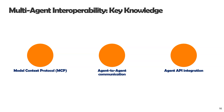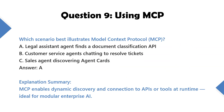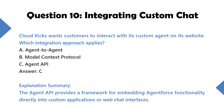This domain tests how multiple agents and external systems communicate, using MCP, A2A, and the Agent API. Question 9: Which scenario best illustrates Model Context Protocol (MCP)? Question 10: CloudKix wants customers to interact with its custom agent on its website. Which integration approach applies?